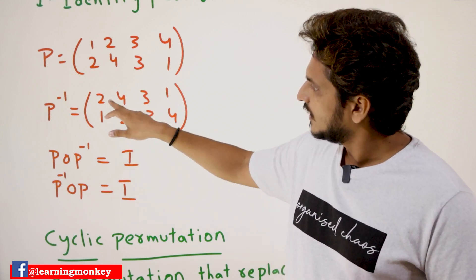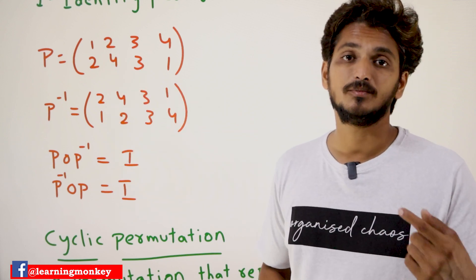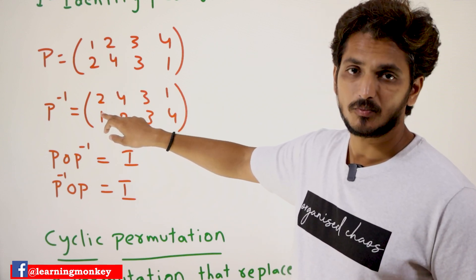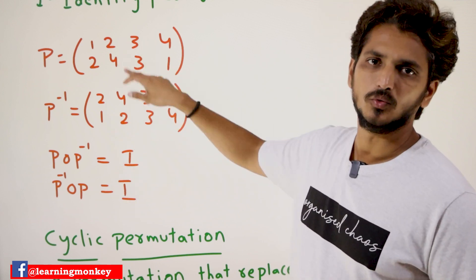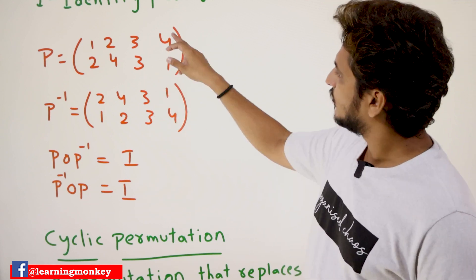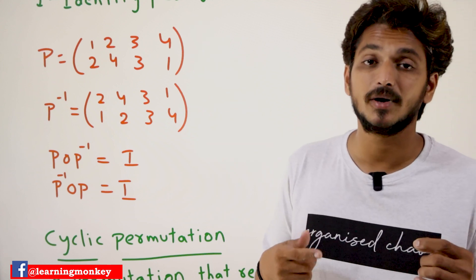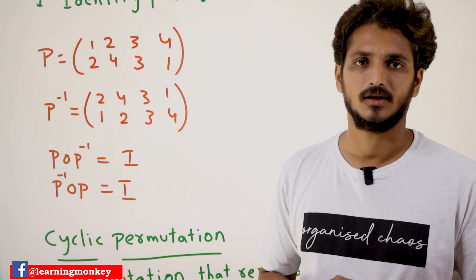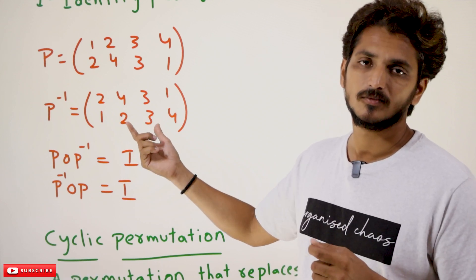Because P composition P-inverse should give the identity permutation. Computing the composition: 1 through P gives 2, through P-inverse gives 1; 2 through P gives 4, through P-inverse gives 2; 3 through P gives 3, through P-inverse gives 3; 4 through P gives 1, through P-inverse gives 4. So we get the identity permutation from P composition P-inverse.